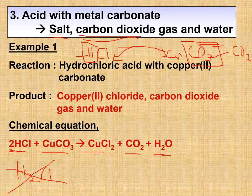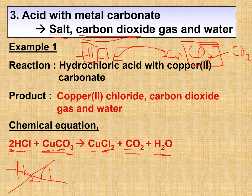You can only change the coefficient in front, not the formula itself. Checking balance: chlorine — 2 on the left, 2 on the right. Copper — 1 on each side. Carbon — 1 on each side. Oxygen — 3 on the left (from CuCO₃), and 2 + 1 = 3 on the right. The equation is balanced.